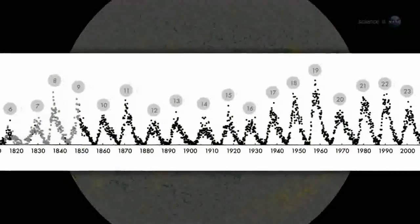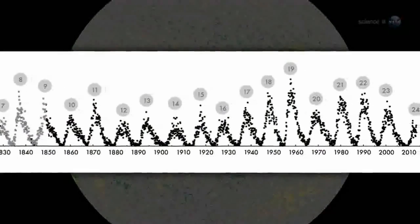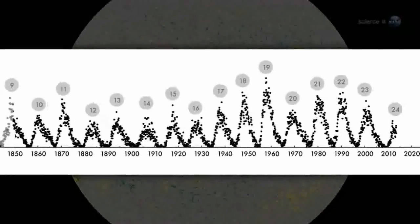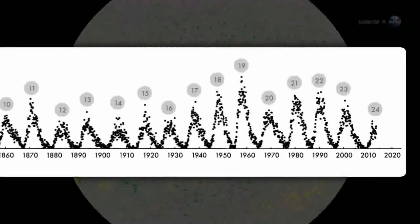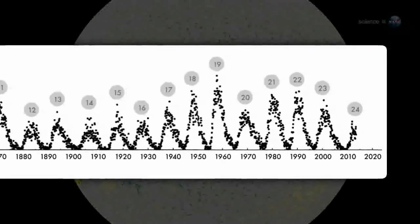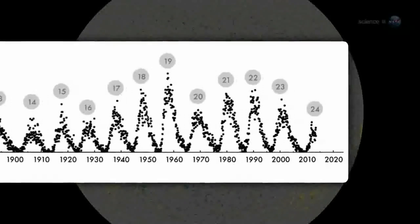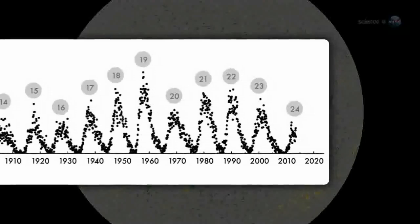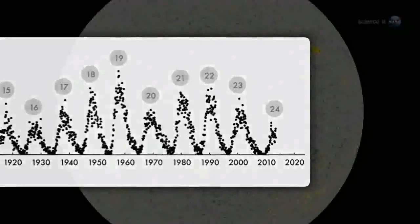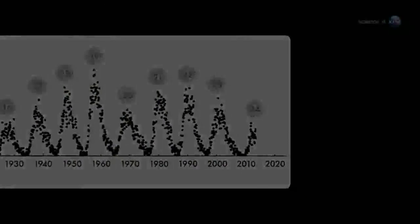The Sun's magnetic field changes polarity approximately every 11 years. It happens at the peak of each solar cycle, as the Sun's inner magnetic dynamo reorganizes itself. The coming reversal will mark the midpoint of solar cycle 24. Half of Solar Max will be behind us, with half yet to come.